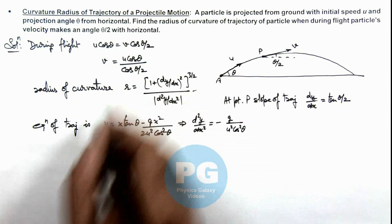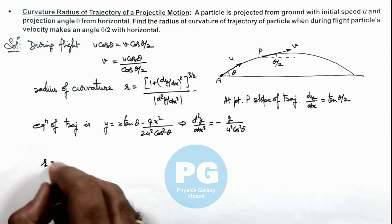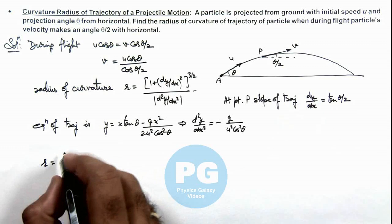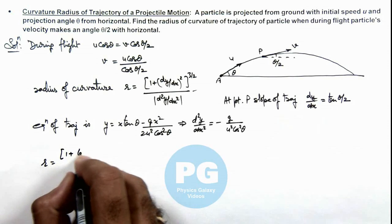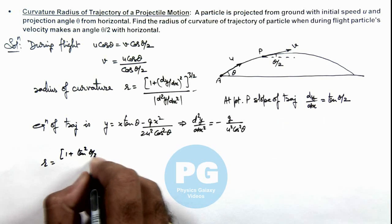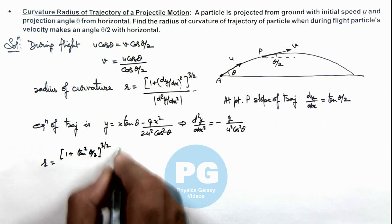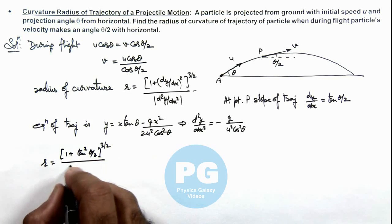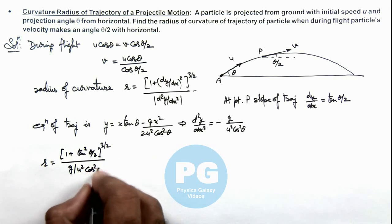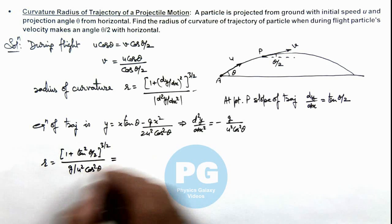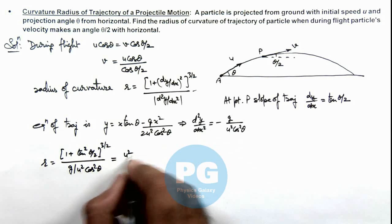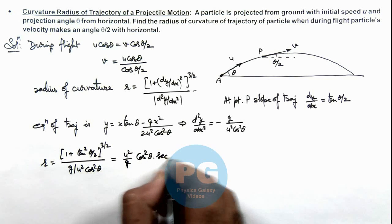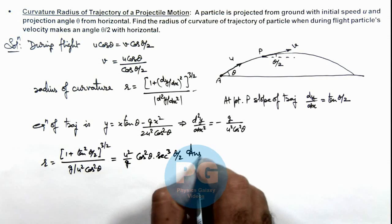Now from this relation we can see the radius of curvature at point where slope is tan θ/2. We can write it as [1 + tan² θ/2]^(3/2) divided by the value of second derivative magnitude, this is g/(u² cos² θ). On further simplifying we are getting the result as u²/g cos² θ multiplied by sec³ θ/2. This is the final result of this problem.